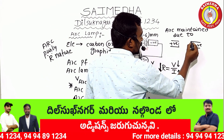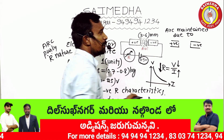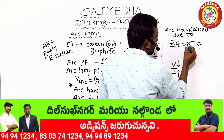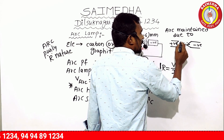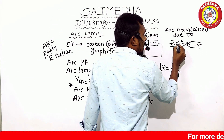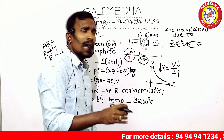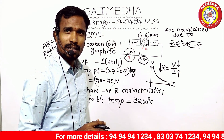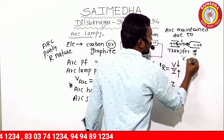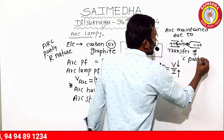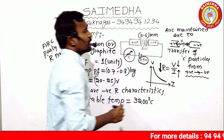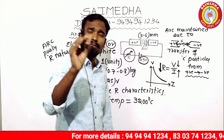In general, the positive electrode wears out. The carbon particles from the positive electrode move to the negative electrode. Carbon particles transferring from positive to negative electrode causes the arc to be strongly maintained. The arc is maintained due to the transfer of carbon atoms — from the positive electrode to the negative electrode.